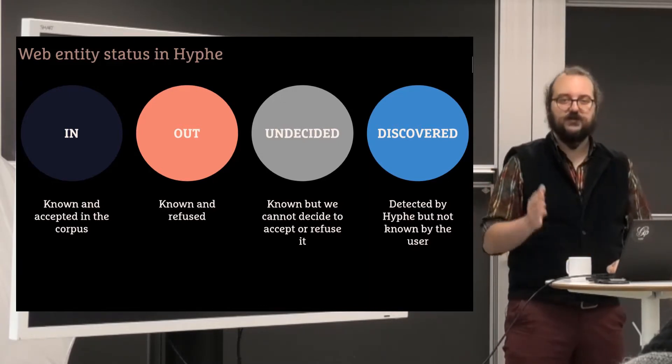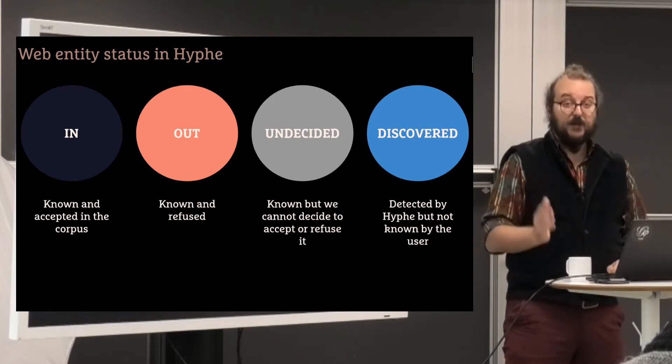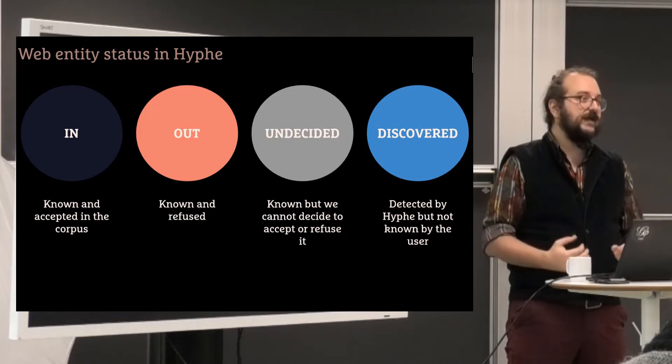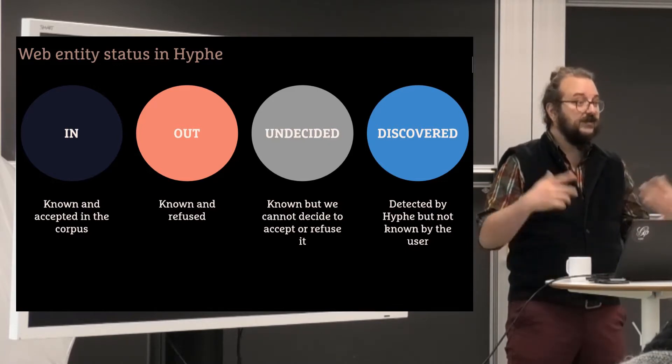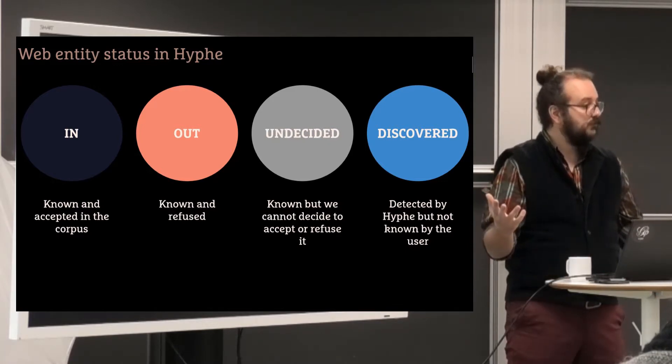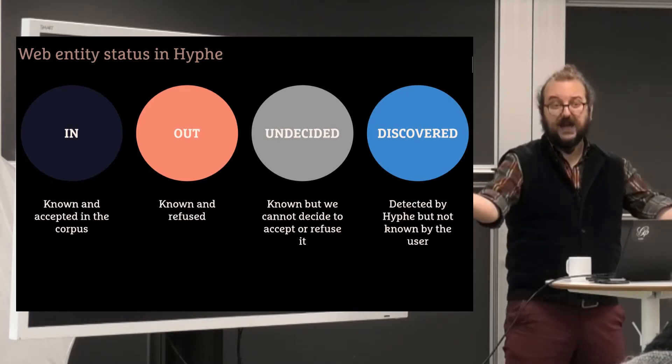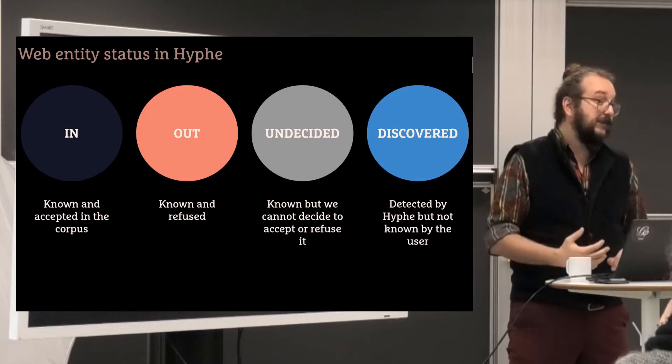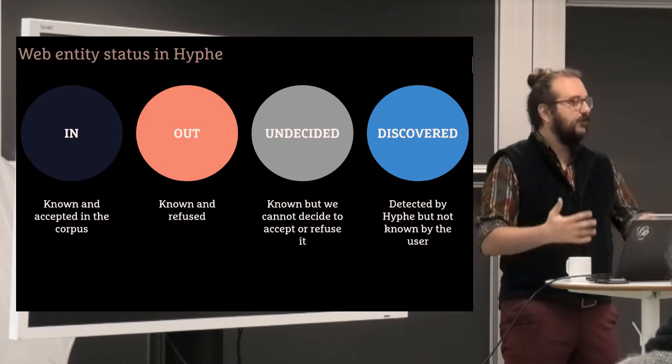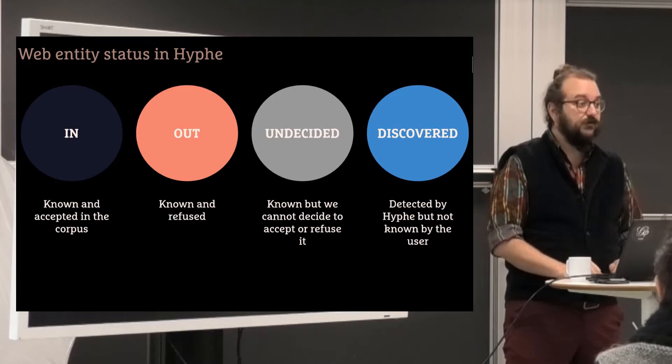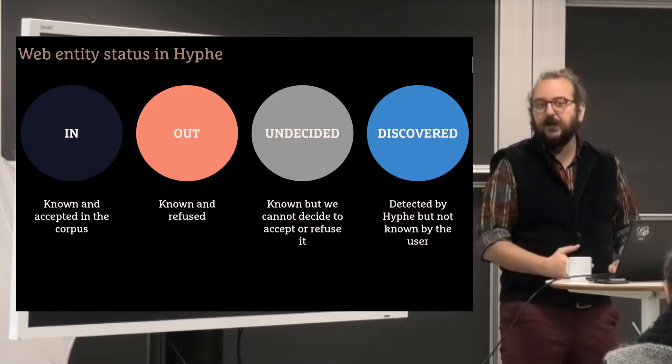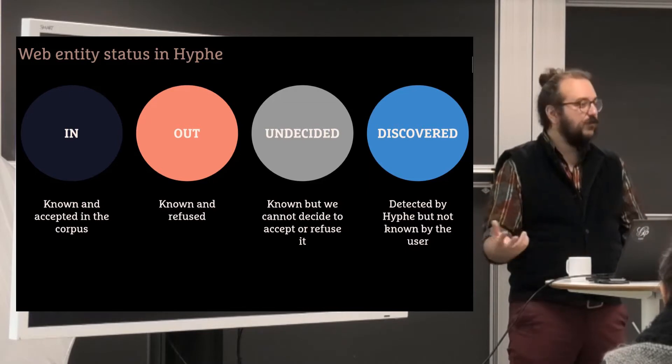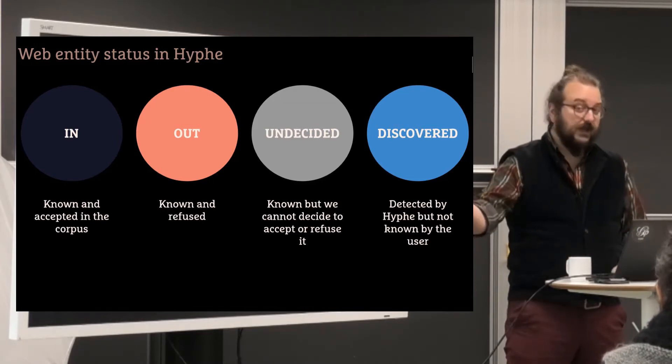And finally, there are the DISCOVERED. The discovered web entities have been discovered by Hyphe in the sense that they are cited by the websites you know. They're in the end of the hyperlinks, but we've not crawled them. We presume they exist. They might even not exist because the link has an error or because the website has disappeared, but it has existed in some way or it might even exist in the future again.